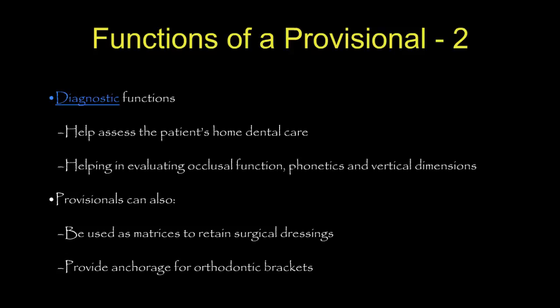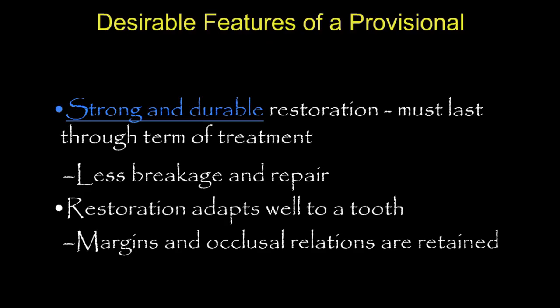We can use provisionals as a matrix to hold dressings in place — for example, after an extraction with a bone graft and socket preservation. They can also provide anchorage for orthodontics. Just this week, my orthodontist asked me to fabricate full-contoured provisionals because the original crowns were bulky and out of proportion, so proper anatomical forms allowed brackets to be placed correctly.